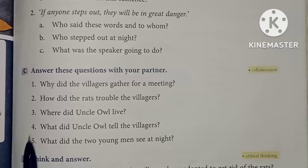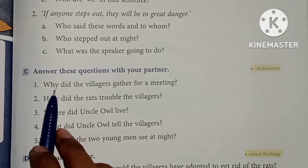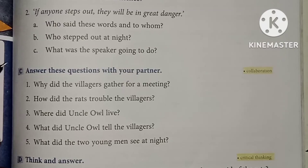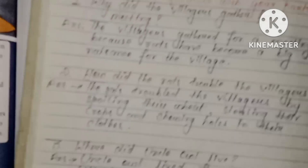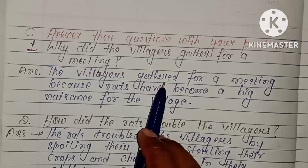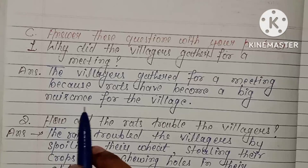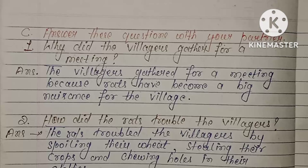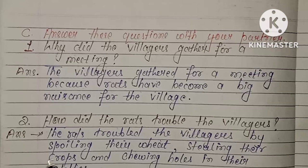Now come to the question and answer. Answer these questions with your partner — ye jo question hai, inaka answer karna hai apne partner ke saath. Question number first: why did the villagers gather for a meeting? The villagers gathered for a meeting because rats have become a big nuisance for the village. Means ki villagers ek jagah isliye ikattha hoke meeting kiye the, kyunki rats jo the, unke village ke liye ek bahut hi bada musibat ban gaye the.